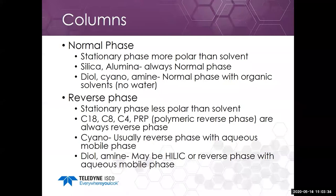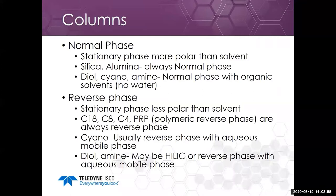We'll start with columns. Normal phase is defined as the stationary phase being more polar than the solvent. These include silica gel and alumina, which are always normal phase. There are also other types such as diol, cyano, and amine — if you're running organic solvents without water, those will act as normal phase. We have a poster on our website that describes how these columns work.